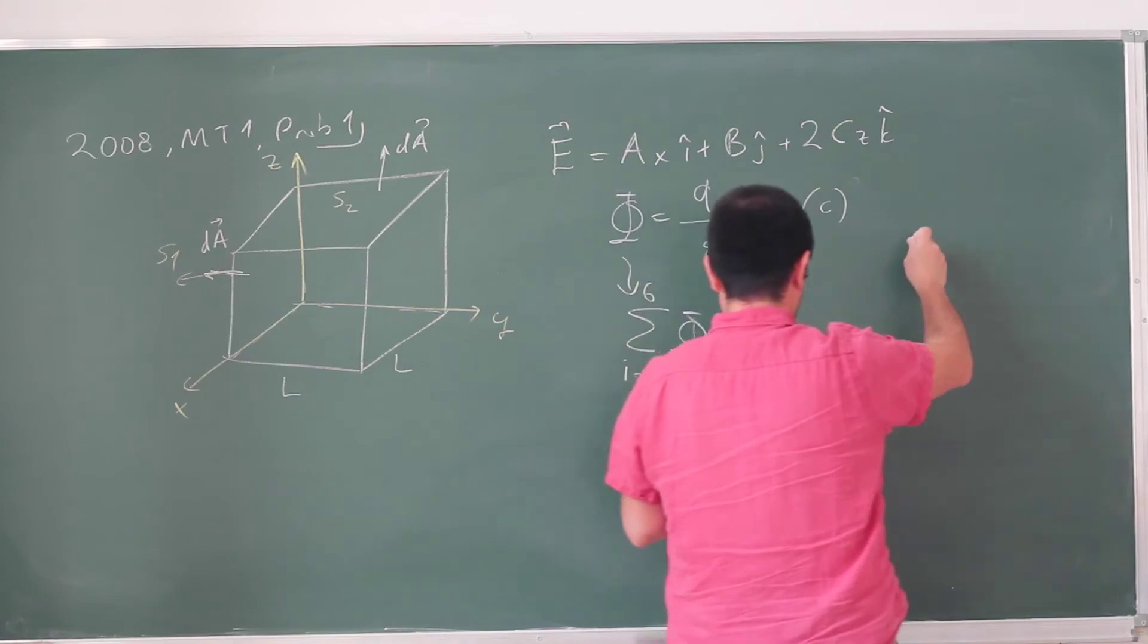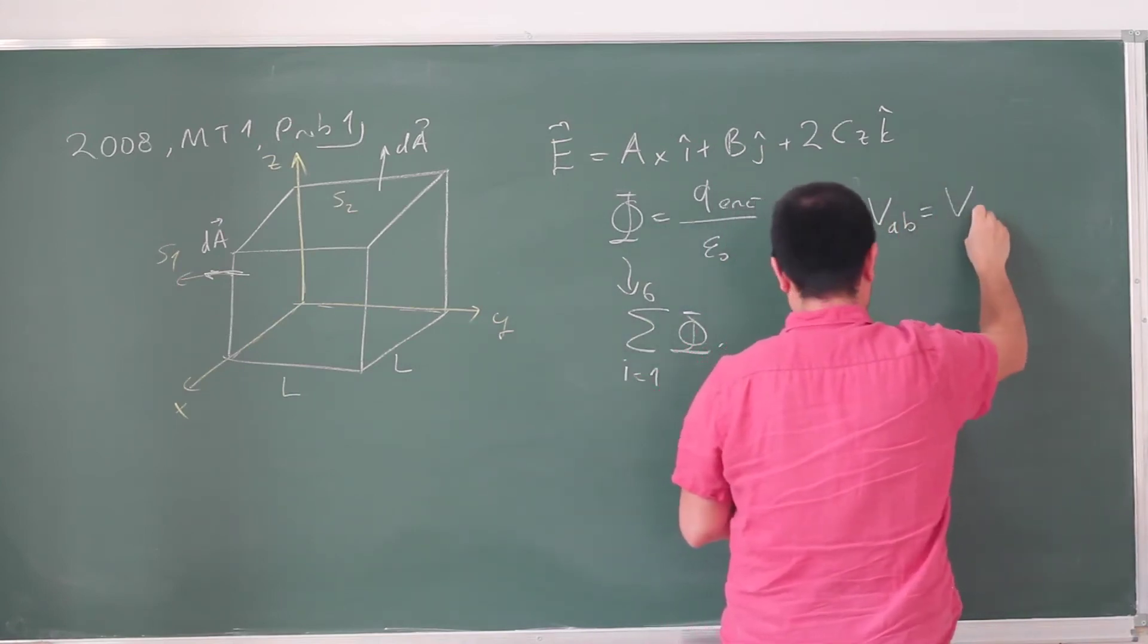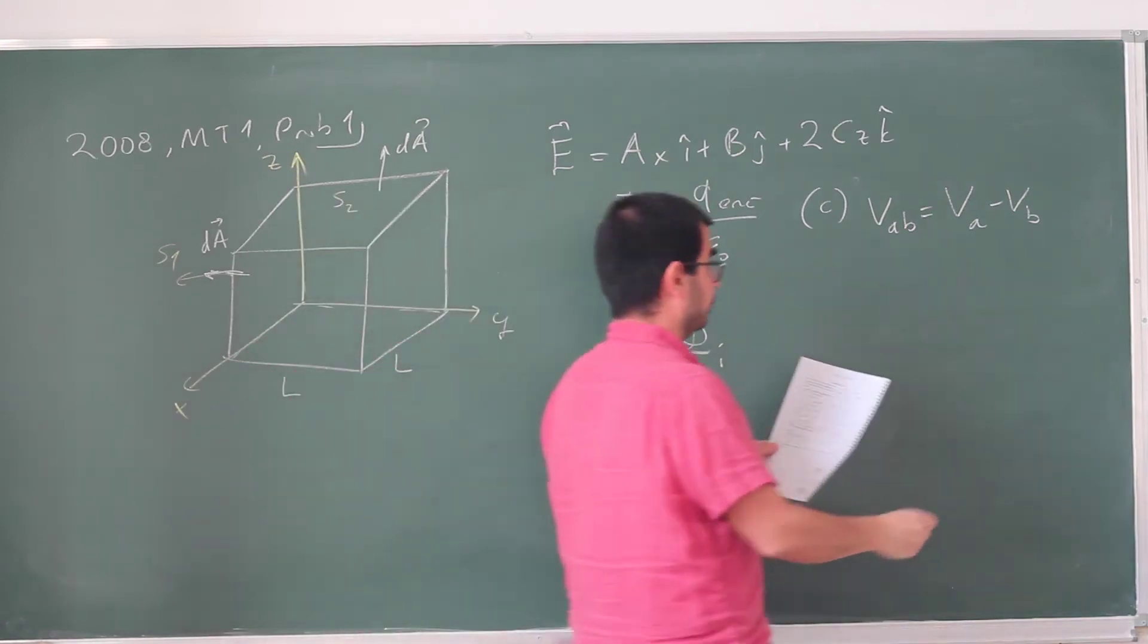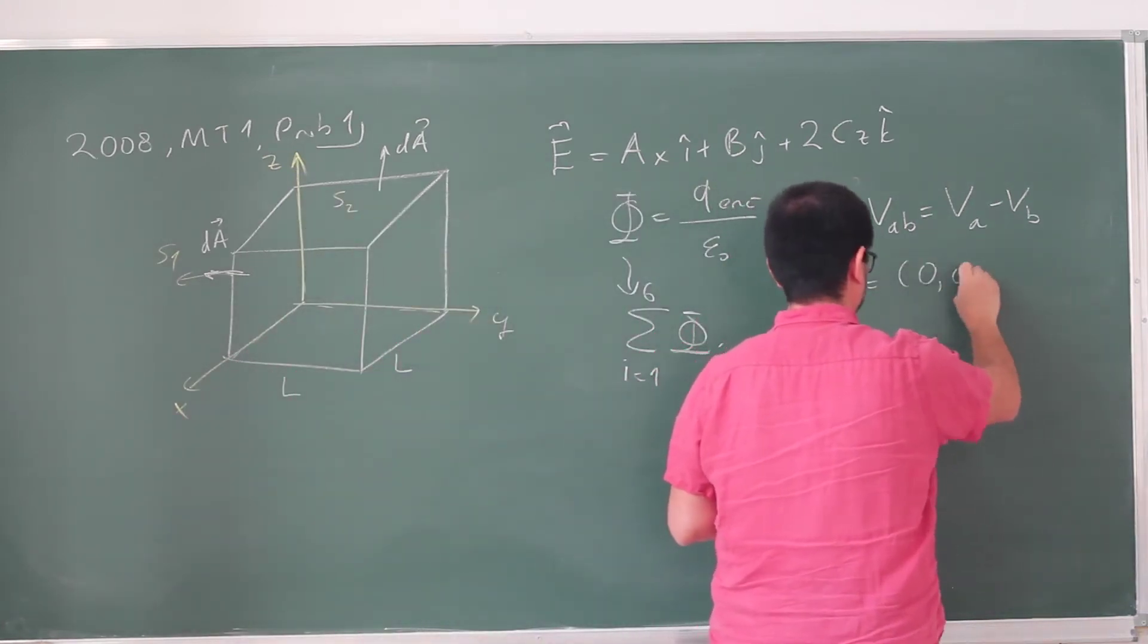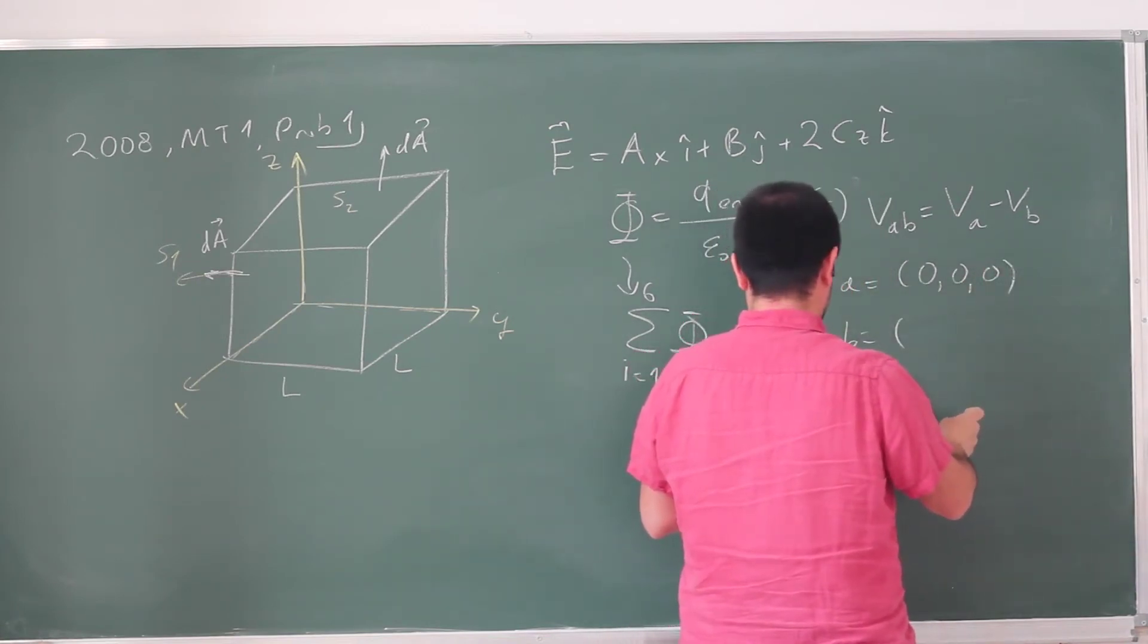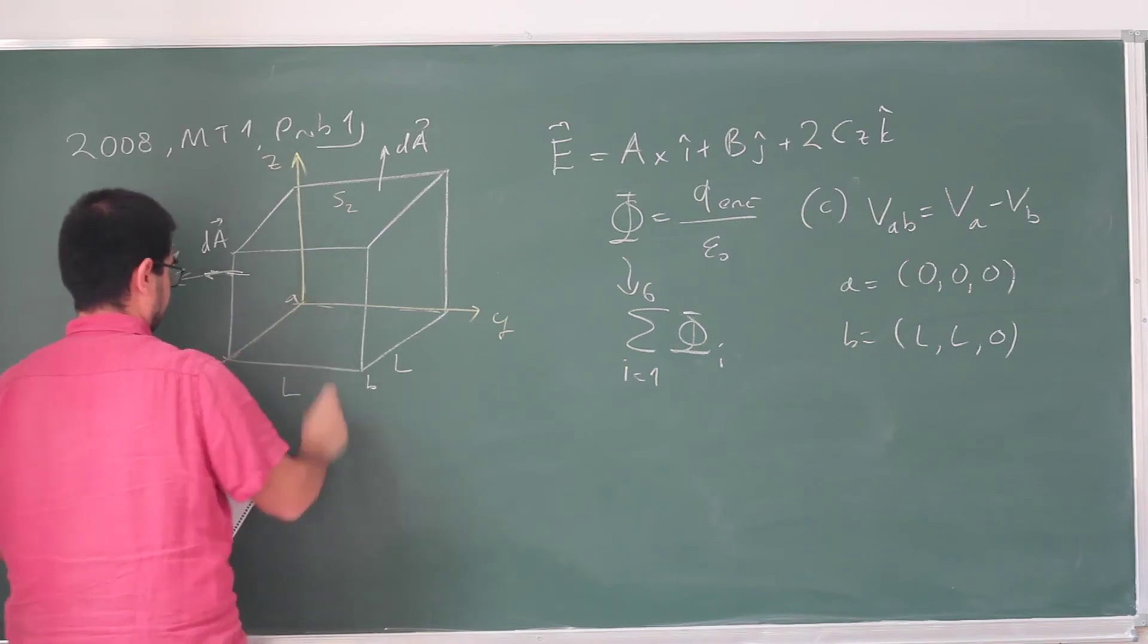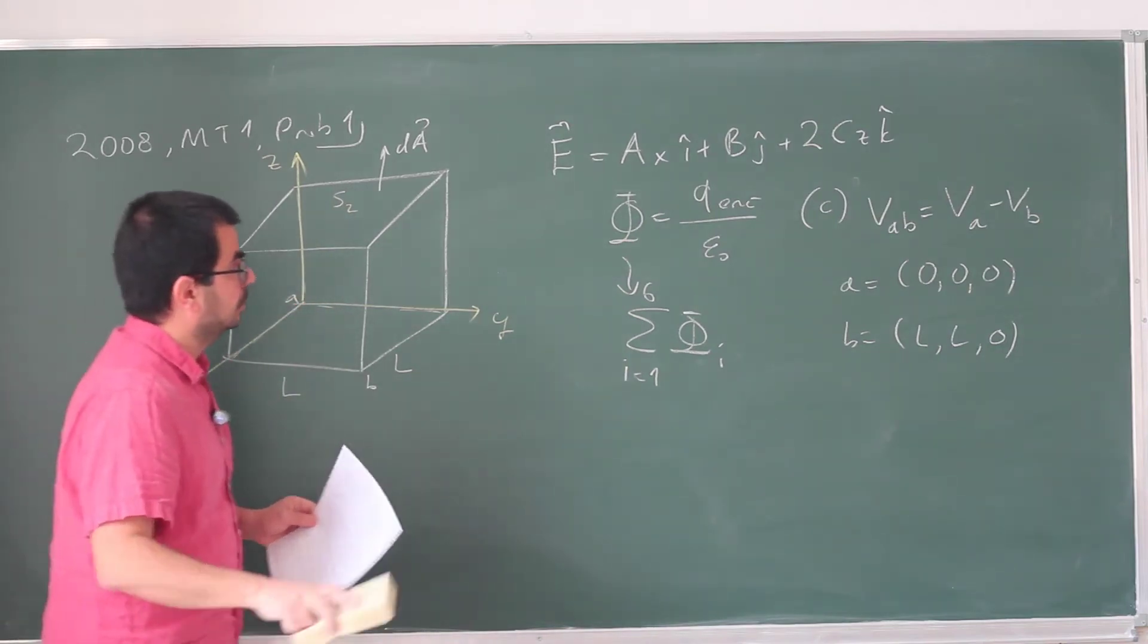And then they're asking for the potential difference. For part C, potential difference V_AB, V_A minus V_B, between coordinates. Point A is the origin, and point B is (L,0,0). So it's this corner of the cube. So this is B, this is A.